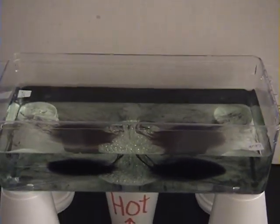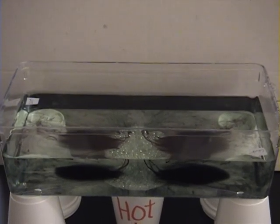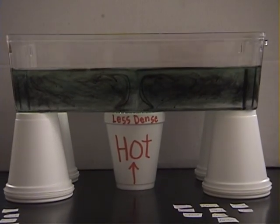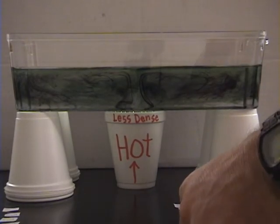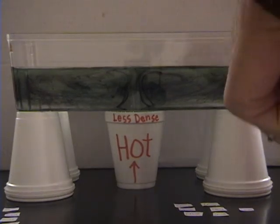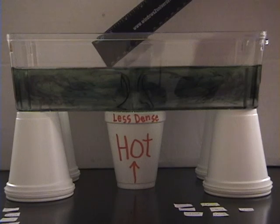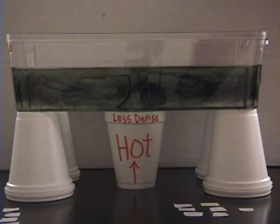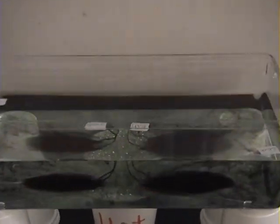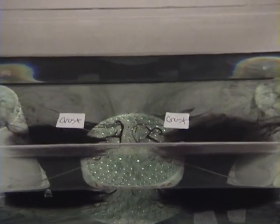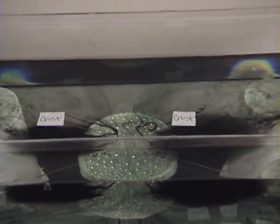As you can see now the crust papers are at opposite ends of the water bath. Pretty clear we have a divergent boundary right here.